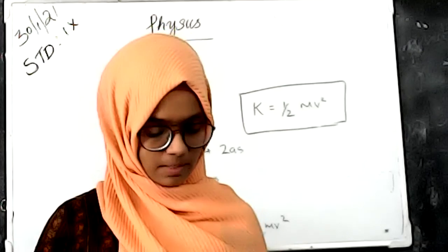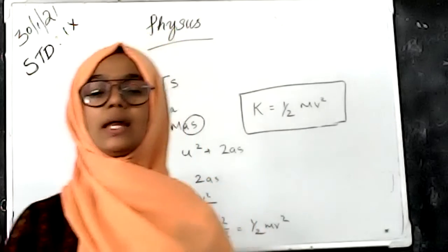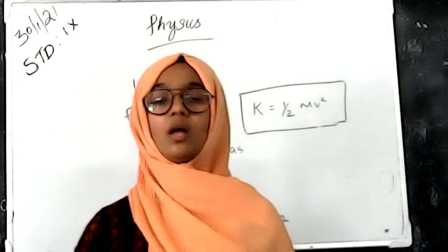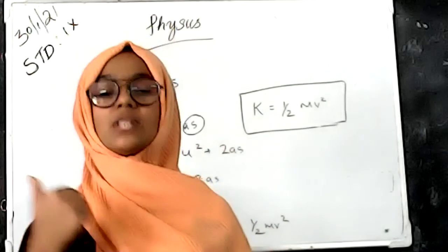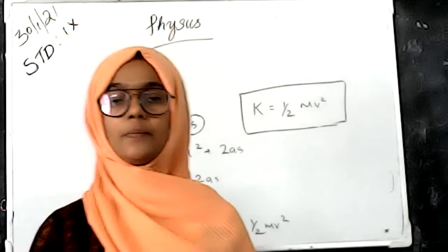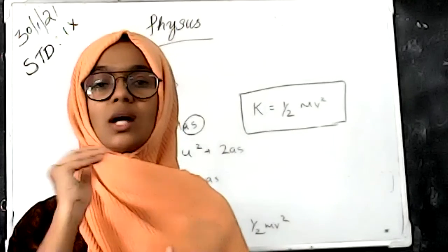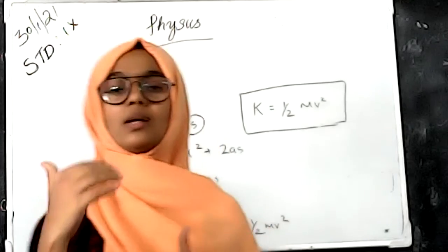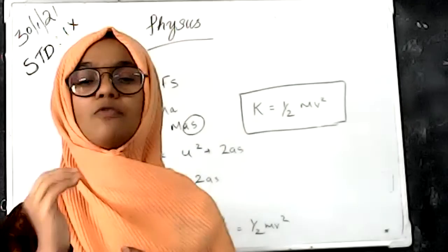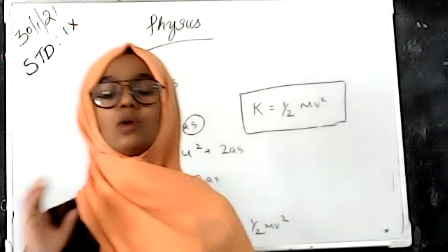Mechanical energy has two types: kinetic energy and potential energy. Kinetic energy is the energy of a body in motion. The equation for kinetic energy is KE = ½mv². Potential energy will be discussed in the next class.